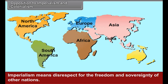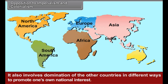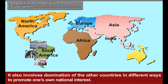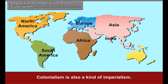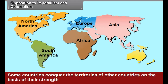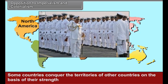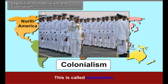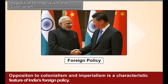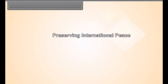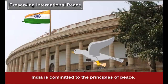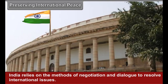Some of the main features of India's foreign policy are as follows. Opposition to Imperialism and Colonialism: Imperialism means disrespect for the freedom and sovereignty of other nations. It also involves domination of other countries in different ways to promote one's own national interest. Colonialism is also a kind of imperialism — some countries conquer the territories of other countries and establish their dominance. This is called Colonialism.